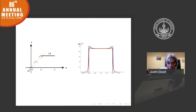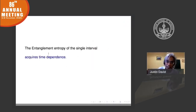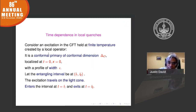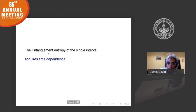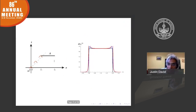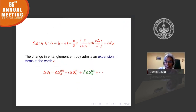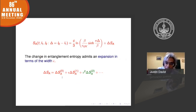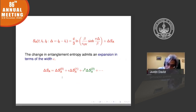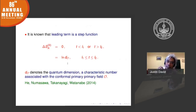Sure enough, it does change. The entanglement entropy acquires time dependence as the pulse moves in. We have a parameter — the width of the pulse — so we can perform an expansion in the pulse width ε. At the zeroth order there is a sudden jump once the pulse enters. The jump was calculated earlier and has a characteristic dependence on the operator creating the pulse. At linear order in ε, the correction is zero. At quadratic order, there is a time-dependent correction.